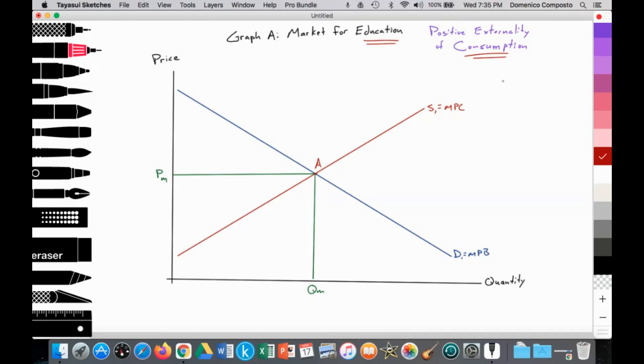So we start off in the free market. We're looking at the provision of education. In this case, it's private schools, S1 equal MPC, which are the private schools. And then we have a downward sloping demand for education equal to the marginal private benefit, the household consuming private education. That provides a free market equilibrium price at PM and a free market equilibrium quantity at QM, where quantity supply equals quantity demanded.